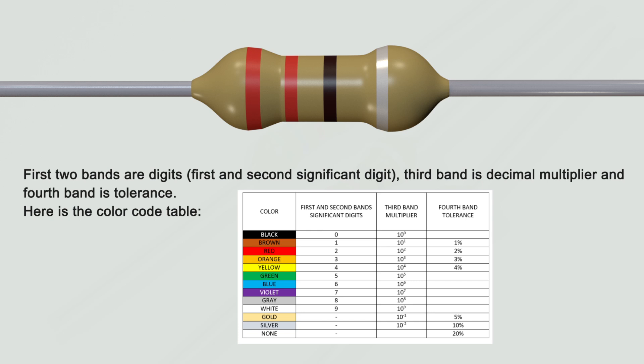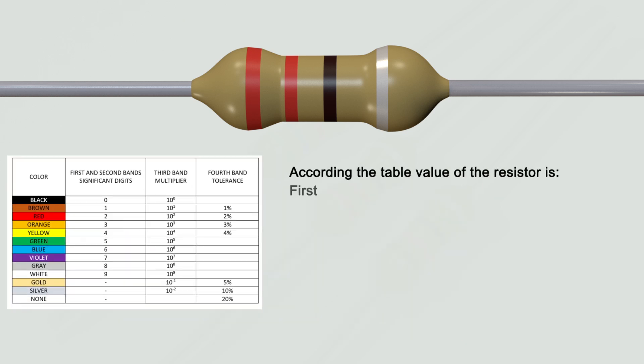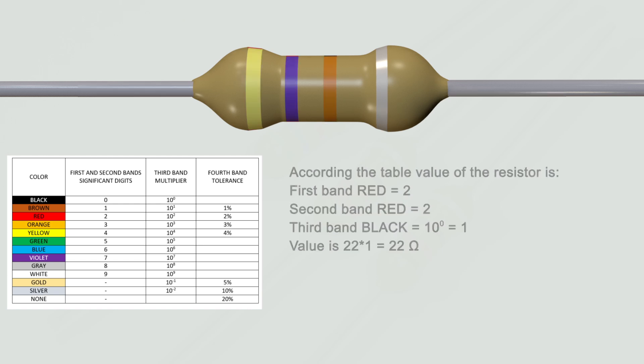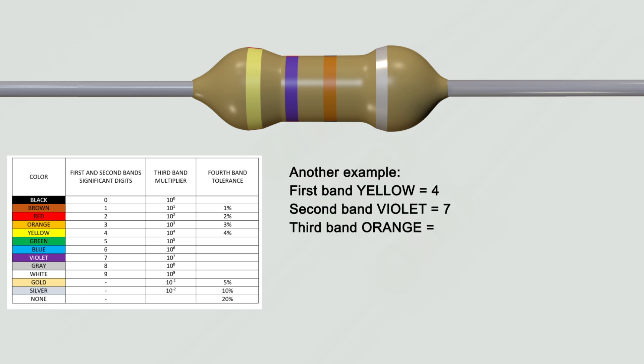Here is the color code table. According to the table, the value of the resistor is: 1st band red equals 2, 2nd band red equals 2, 3rd band black equals multiplier 1, so the value is 22 times 1 equals 22 ohms. Another example: 1st band yellow equals 4, 2nd band violet equals 7, 3rd band orange equals multiplier 1000, so the value is 47 times 1000 equals 47k ohms with 10% tolerance.